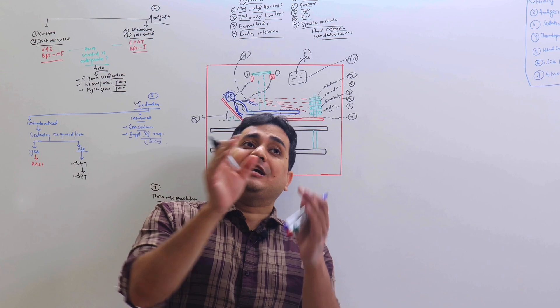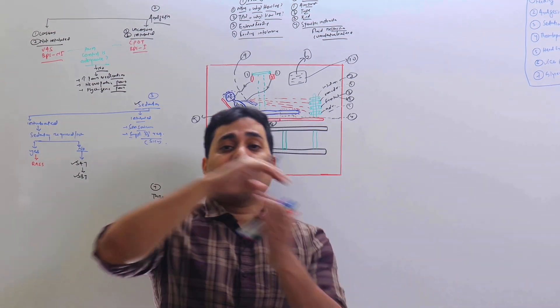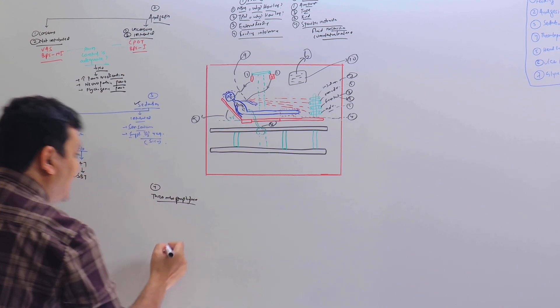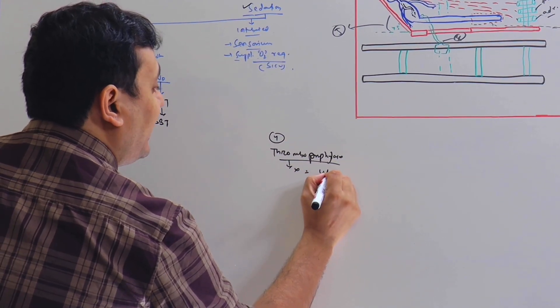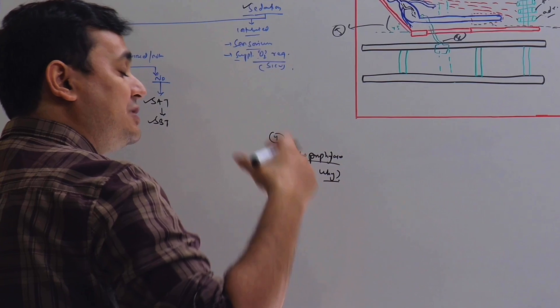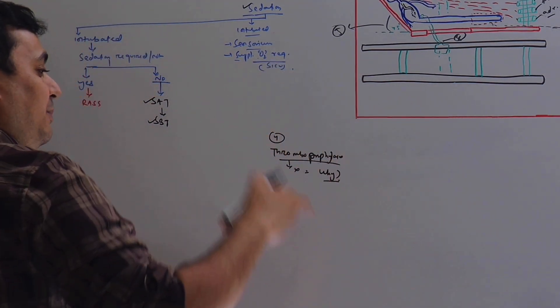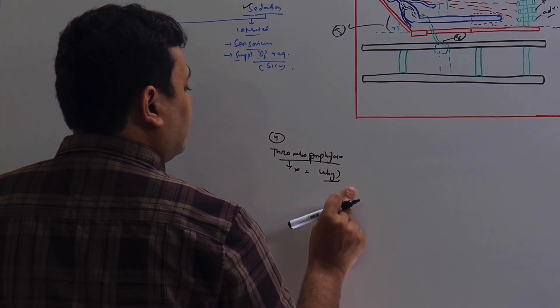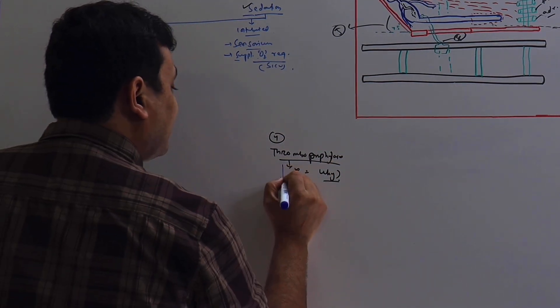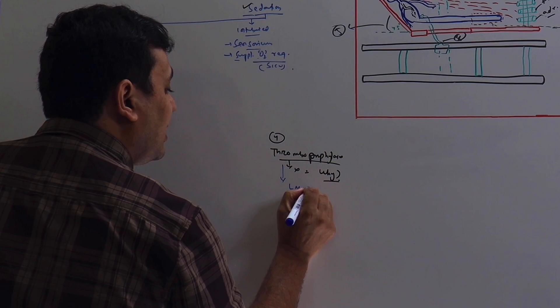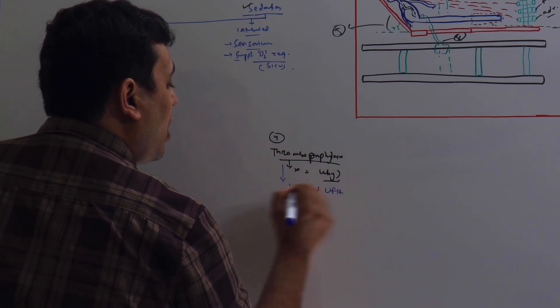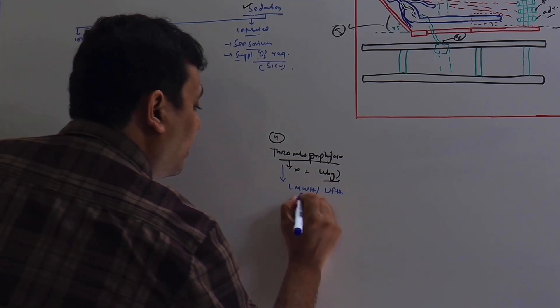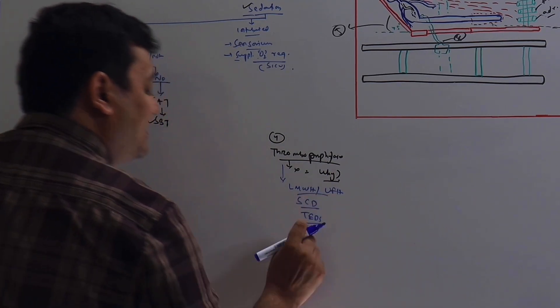Number four is thromboprophylaxis. Every patient in the ICU must be receiving some kind of thromboprophylaxis—it may be pharmacological, it may be mechanical—within 24 hours of admission. If they are not receiving, then why? That you need to mention here. Is it because they're coagulopathic, having bleeding, having thrombocytopenia? What is the reason the person is not getting it? That reason you need to mention and ensure that if there is no reason, the person must be receiving treatment.